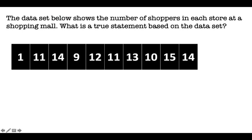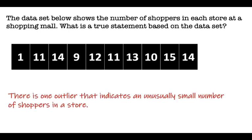So let's go back to our screen. Okay, so they determined that the outlier would be the number one. So therefore, a true statement could say that there's only one outlier that indicates an unusually small number of shoppers in a store because the number one is the smallest number out of the list of numbers that we have. So it just indicates that there is an unusually small number of shoppers, and that is the outlier. All right, so go ahead and pause this one and do your number two.